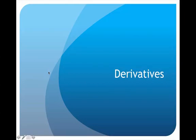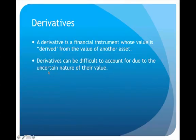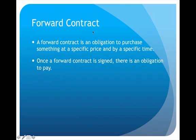This is the video lecture on derivatives. When you talk about a derivative, what you're really talking about is a financial instrument whose value is derived from the value of another asset. Derivatives can be difficult to account for because there's always a certain amount of uncertainty, simply because the value of the derivative itself is based on the value of something else.